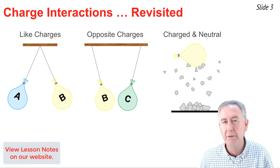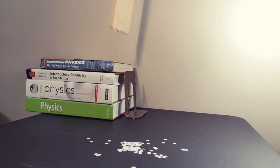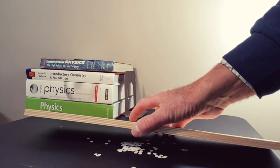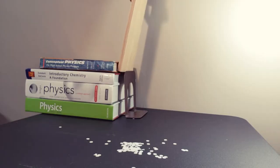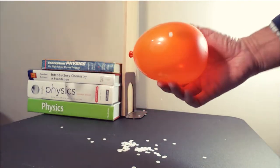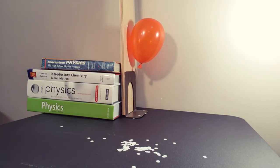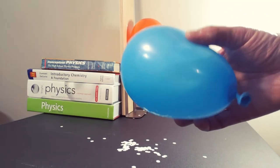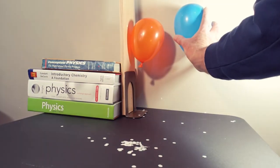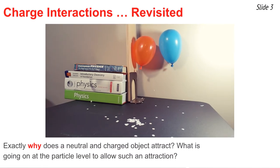Let me show you what I'm talking about with the following demonstration. We have a wooden board to represent a wall, neutral paper bits, and a balloon that's charged. We'll begin by bringing the wooden wall near the paper bits — there's no interaction, so we know that our wall is neutral. Now we'll charge the balloon by rubbing it on wool. We bring it near the paper bits — a clear interaction, which tells us the balloon is charged. When we bring it to the wall, it attracts the wall. A neutral wall and a charged balloon attract. But exactly why does a neutral object like the wall and a charged object like the balloon attract?